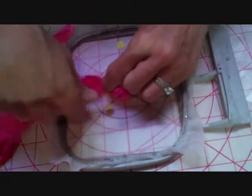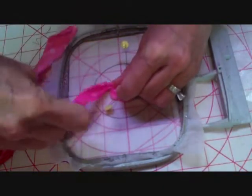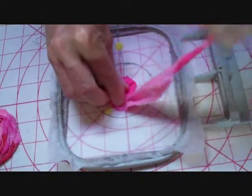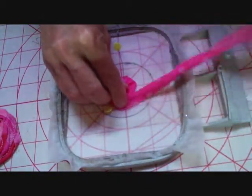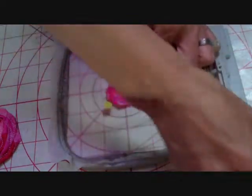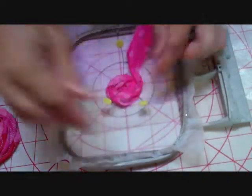Continue to take the strip and twist it and turn it. There is no right way or wrong way. Just overlap the edge just slightly. Continue to come around, placing a pin every once in a while.